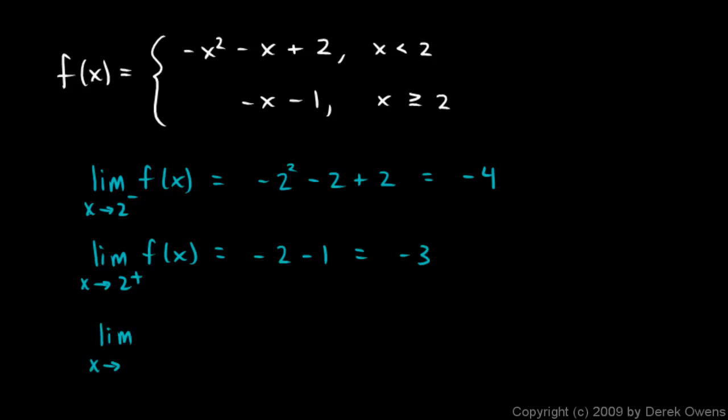So let's write that. Let's write the limit as x approaches 2 of f of x does not exist. But we've still used limit behavior here to describe the way the function behaves on each side of 2.